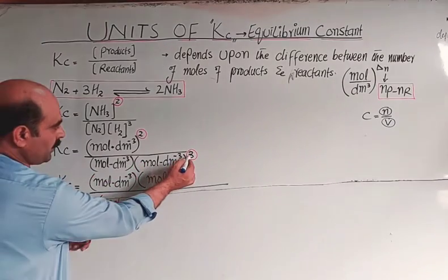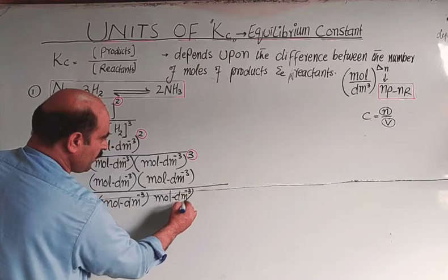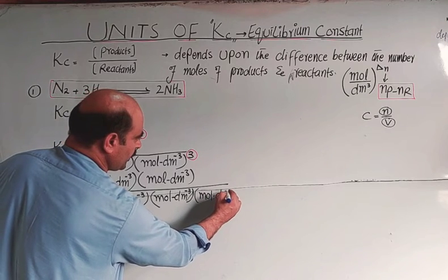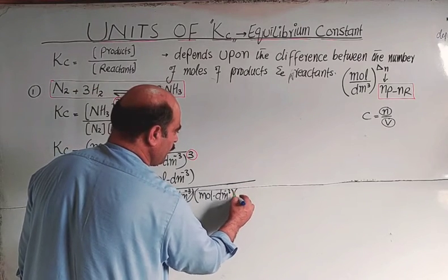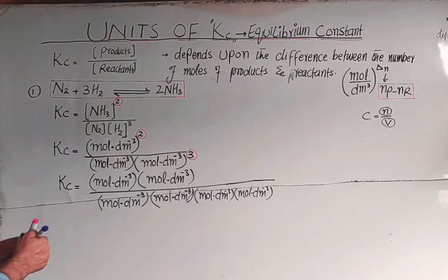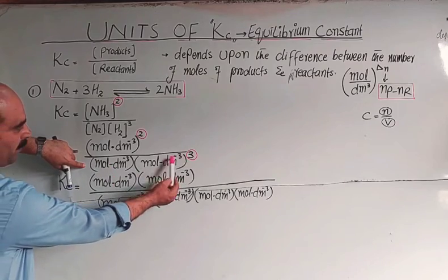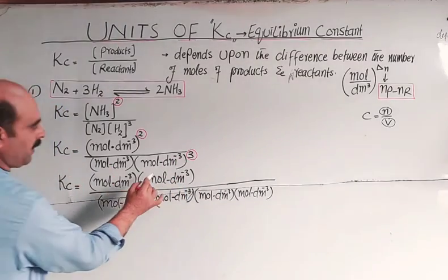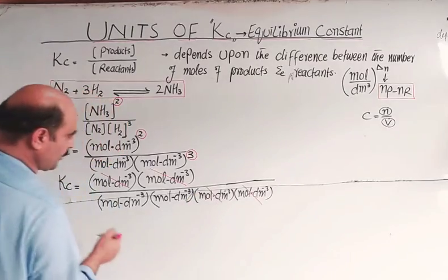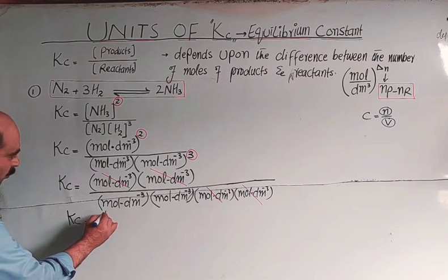In the numerator we have mole per dm³ twice. In the denominator, mole per dm³ one time and mole per dm³ three times — total four times. After cancellation, two from the numerator cancel with two from the denominator, leaving two units of mole per dm³ in the denominator. So Kc equals one over mole per dm³ squared.